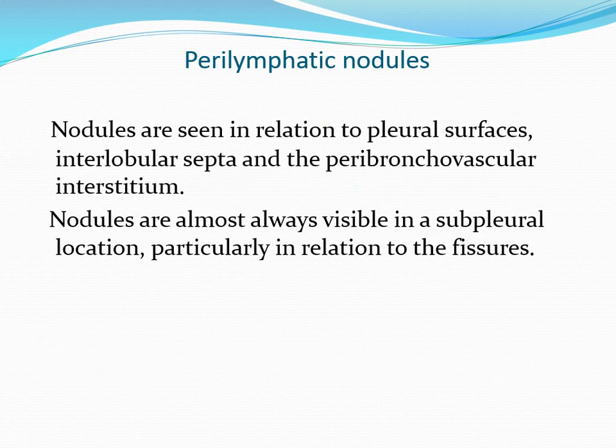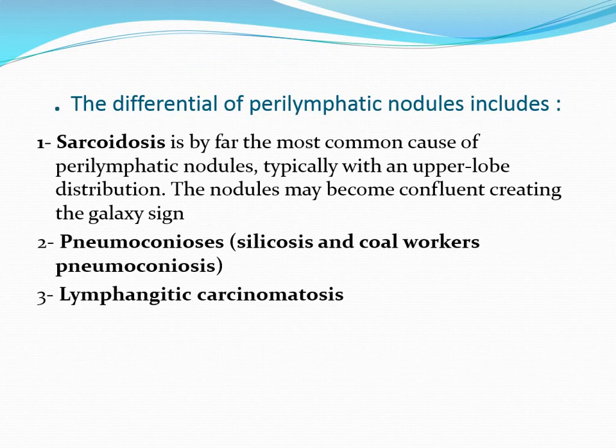The second pattern is perilymphatic nodules. Nodules are seen in relation to the pulmonary surface, interlobular septa, and bronchovascular interstitia. Nodules are almost always visible in sub-pleural location, particularly in relation to the fissures. If the nodule reaches the pleural surface, it is perilymphatic; if it does not reach the pleural surface, it is centrilobular.